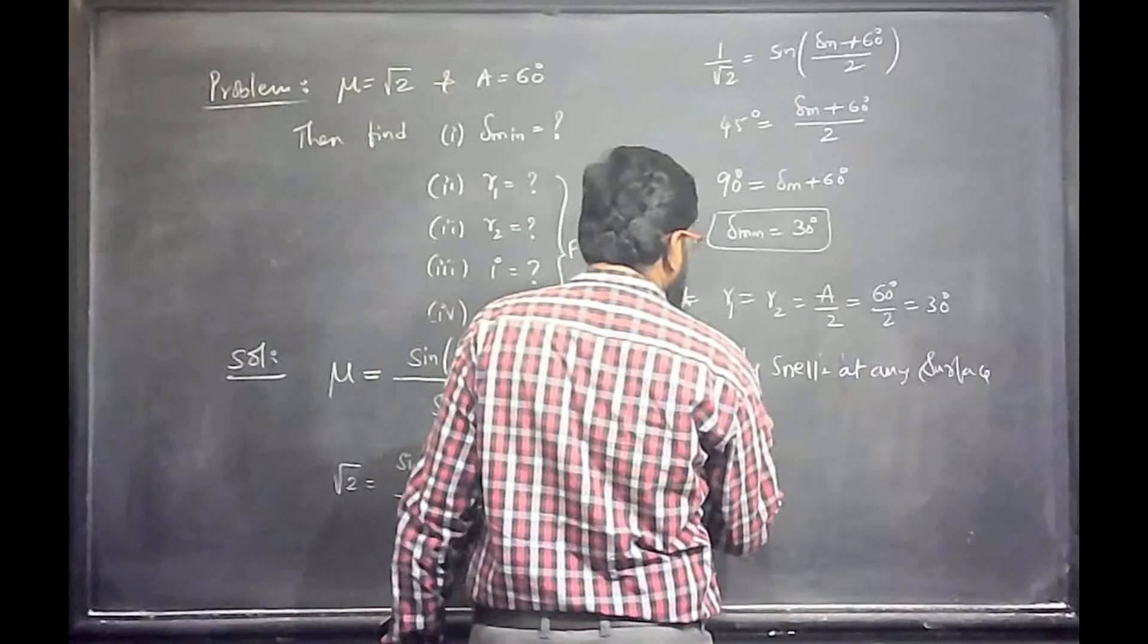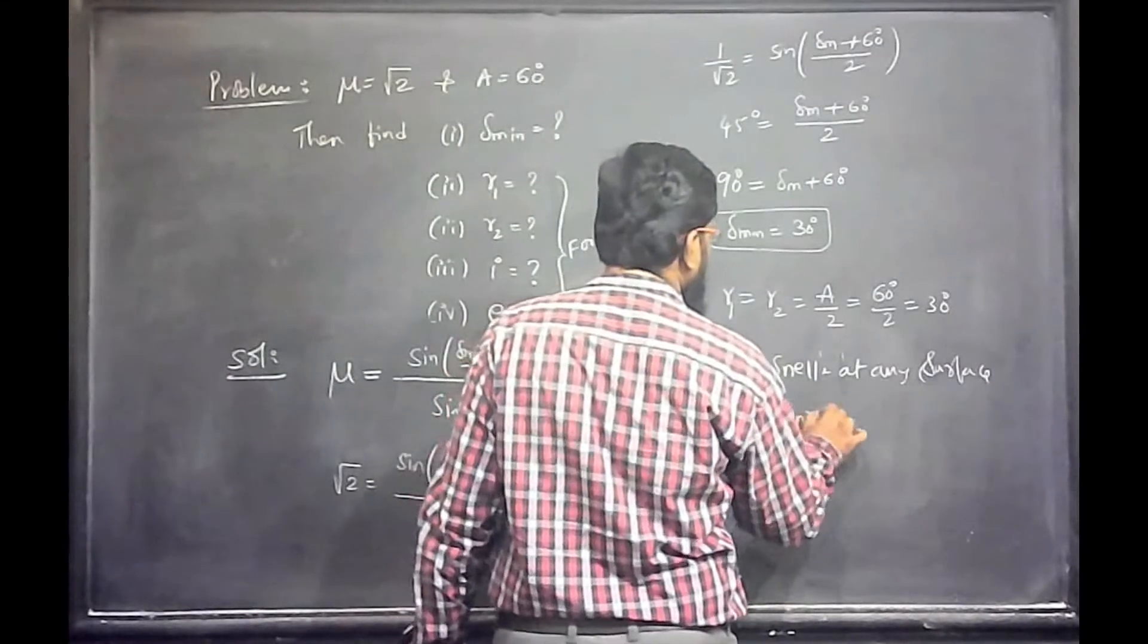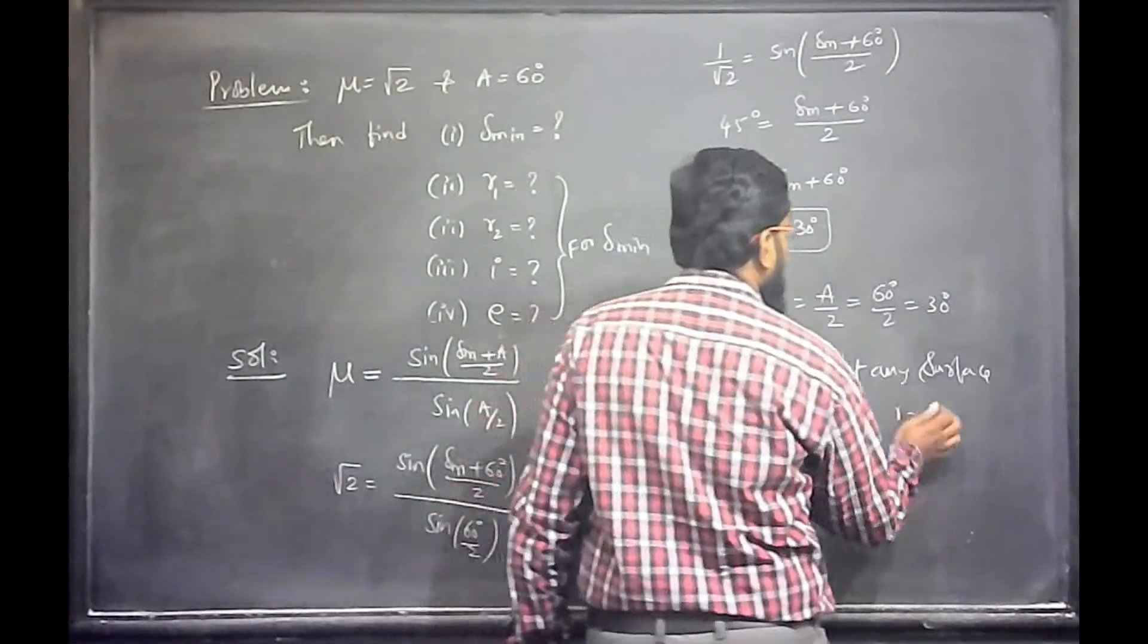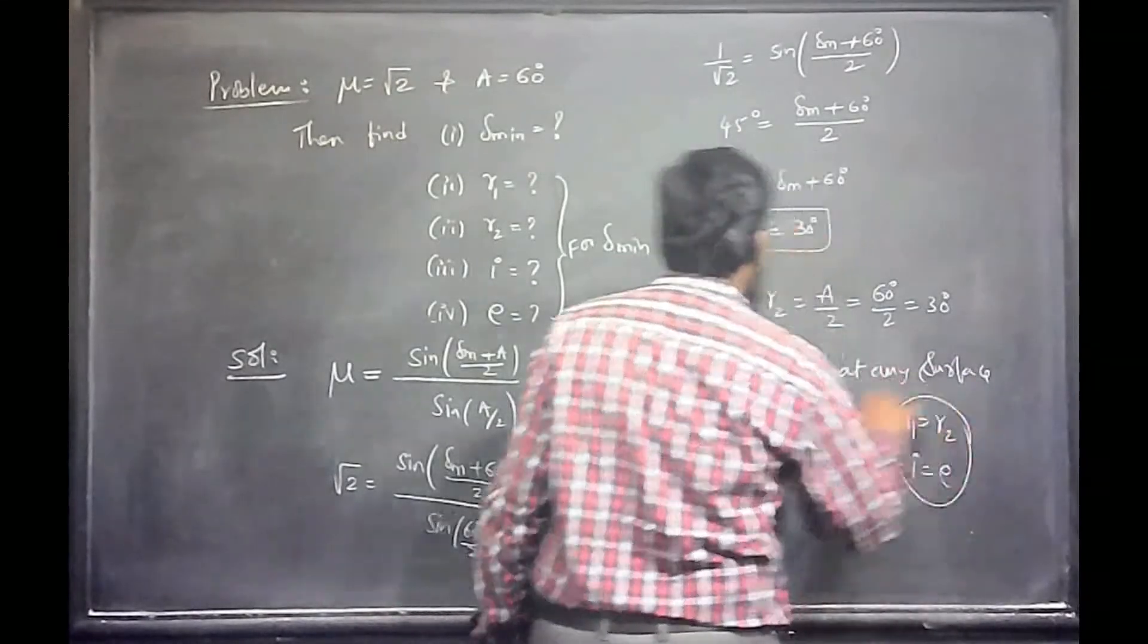Sin I into μ is equal to sin R1. Here R1 is equal to R2. I is equal to E for minimum deviation position.